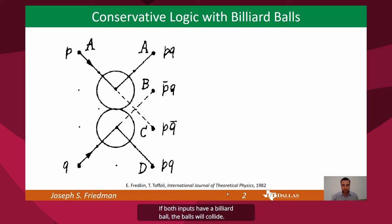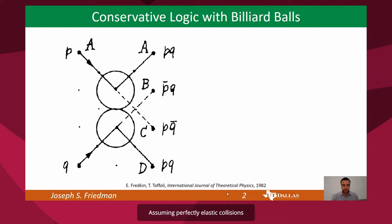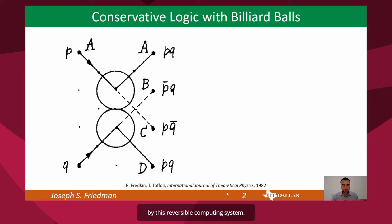If both inputs have a billiard ball, the balls will collide, and these elastic conditions are critical to the billiard ball computing model. Assuming perfectly elastic collisions and a friction-free surface, no energy will be dissipated by this reversible computing system.